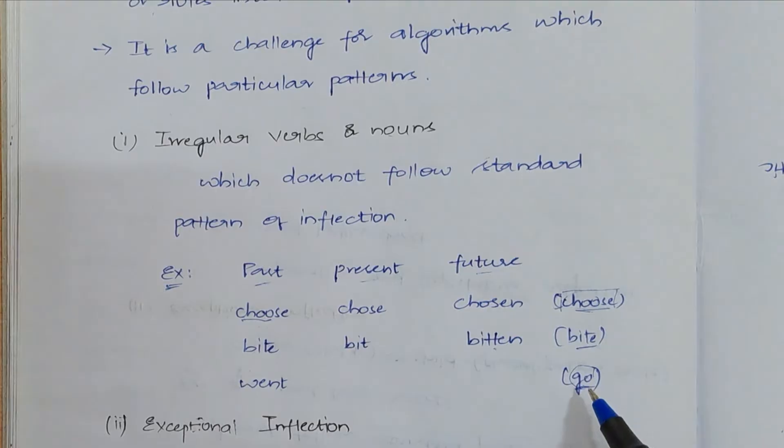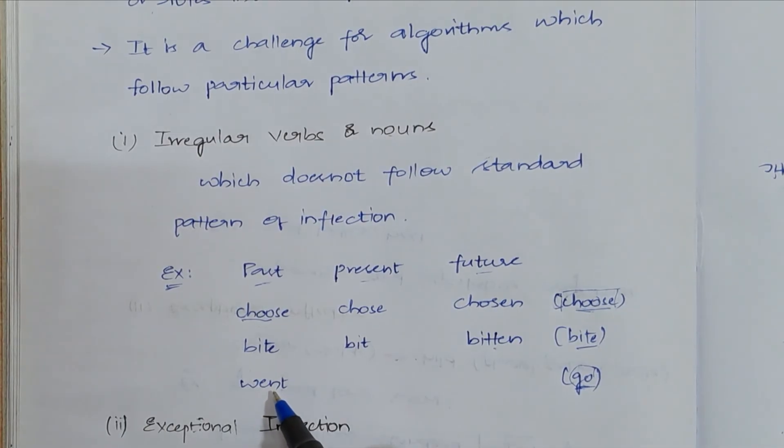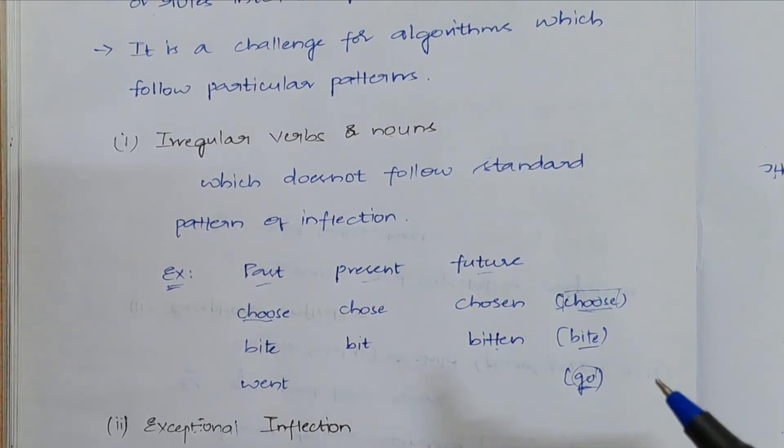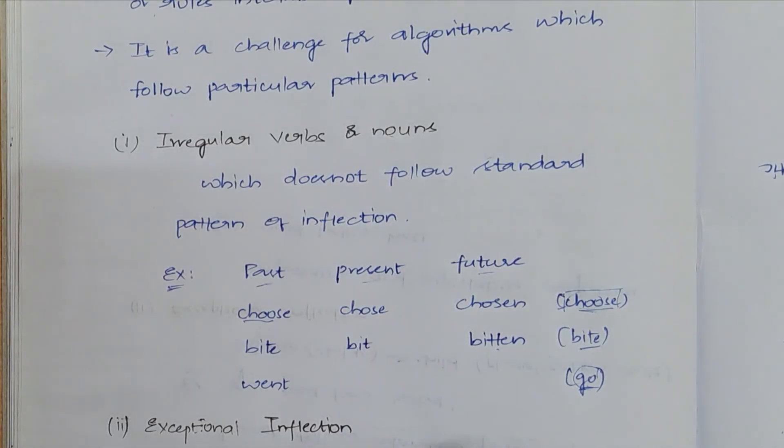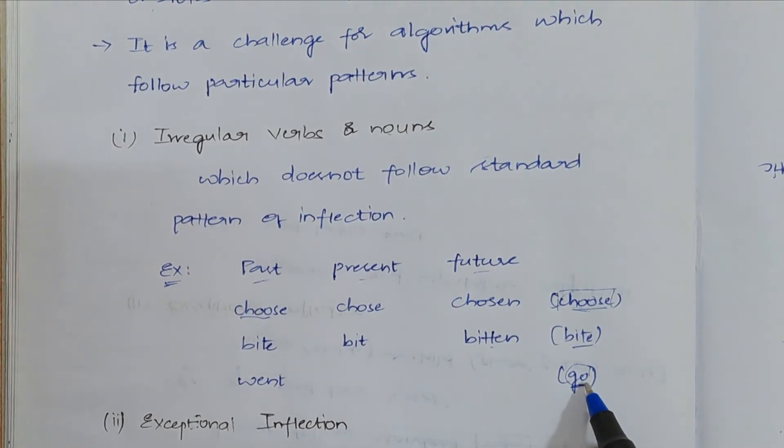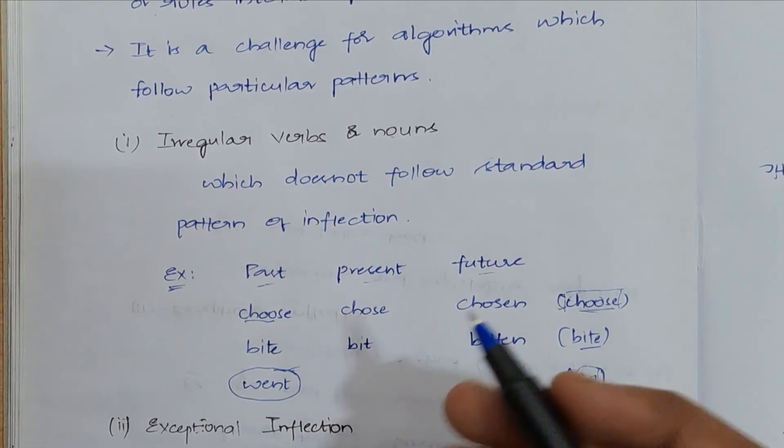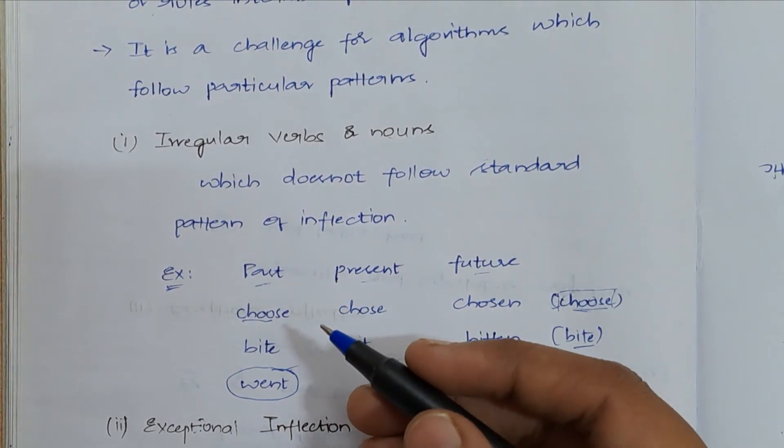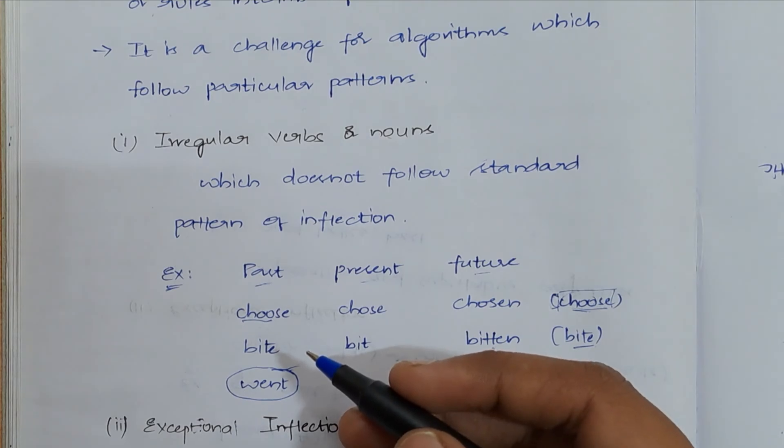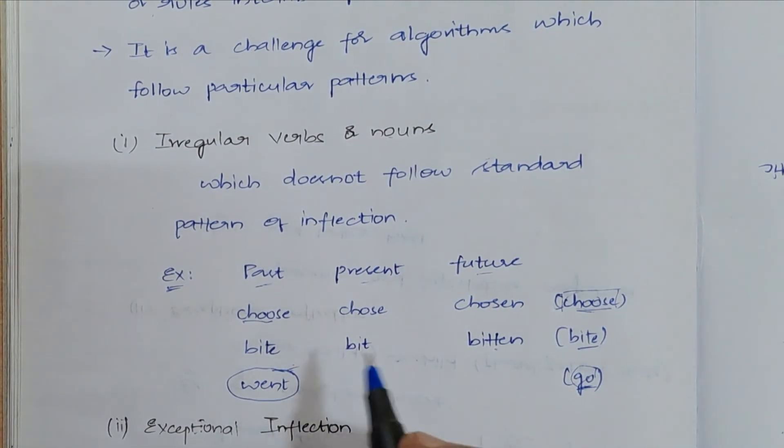Whenever you take go, what actually the algorithm thinks - it should be goes, right? Gone, went, gone. It should be in the form of go, gone, goes like that only. But why it will be went? In these kinds of words, the algorithm might face some difficulties in order to find what kind of words these are. These words are nothing but irregular verbs.